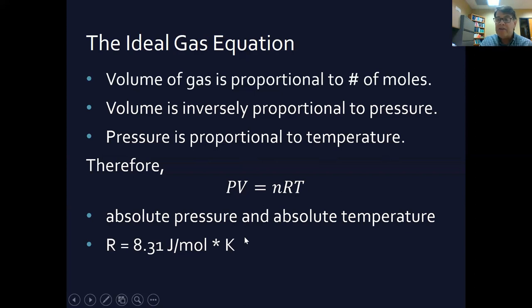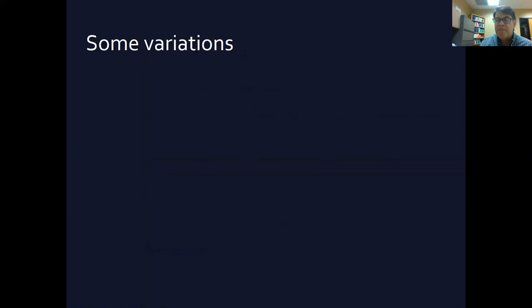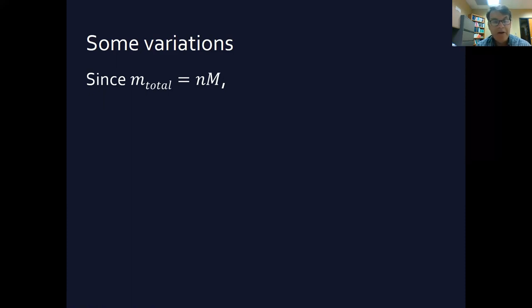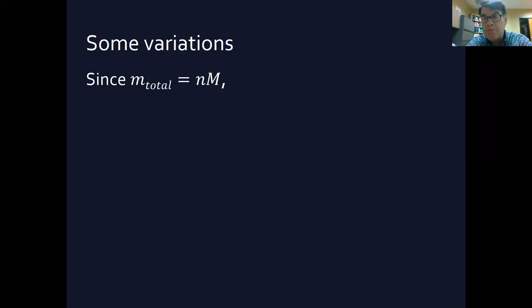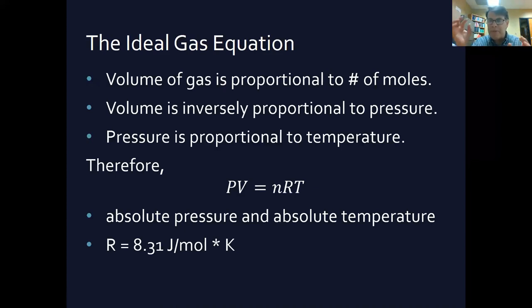There are additional details in this section. The total mass equals the number of moles times the molar mass: m_total = n·M. The molar mass is the number of grams per mole for a particular element or molecule. You may have never heard of a mole — it's not the animal from whack-a-mole! I should explain what a mole is.